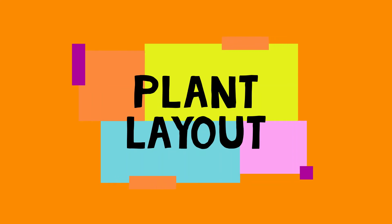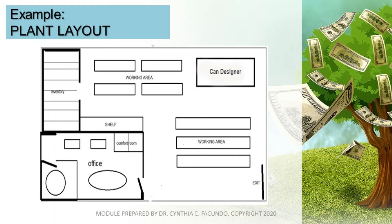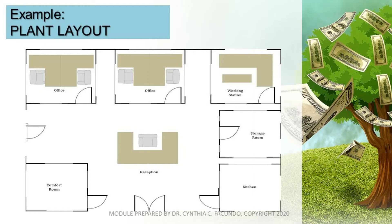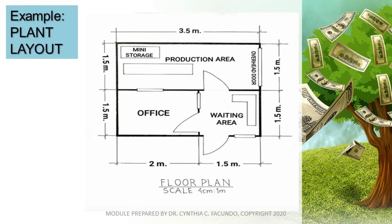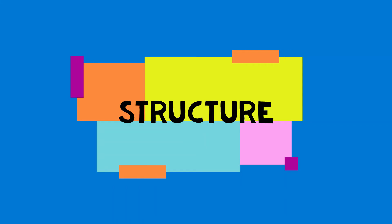Plant layout is the most effective physical arrangement, either existing or planned, of industrial facilities including arrangement of machines, processing equipment, and service departments to achieve the greatest consideration of the 4Ms: men, material, machineries, and methods in a plant.